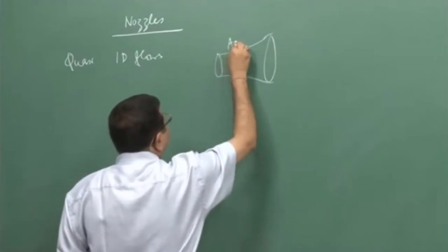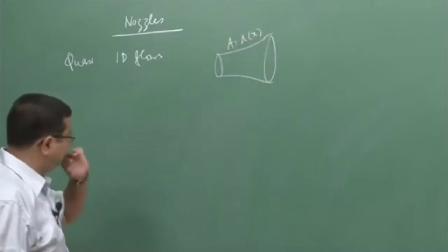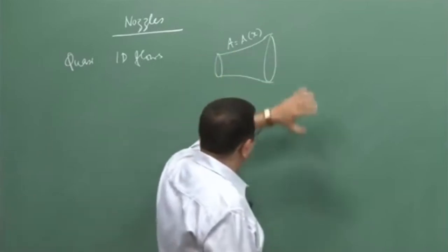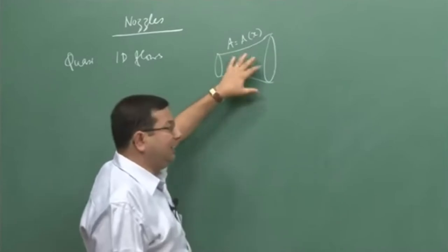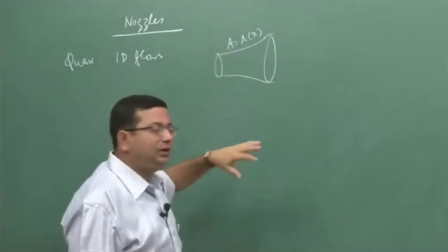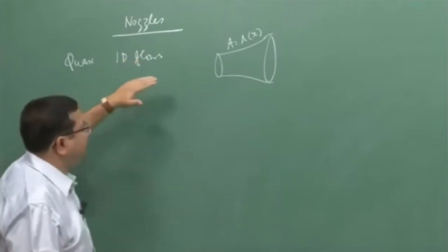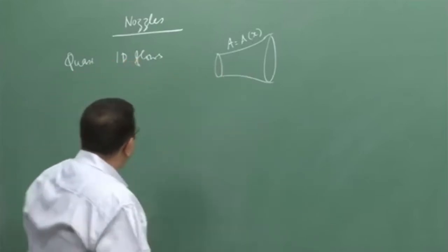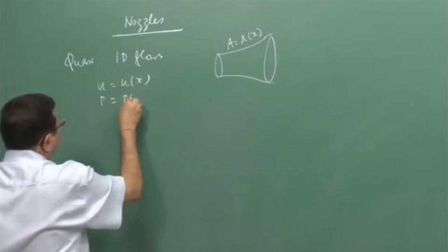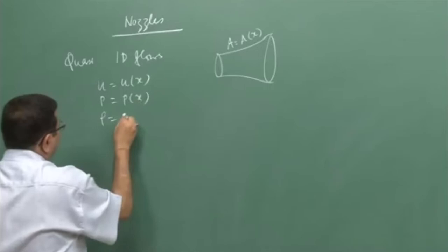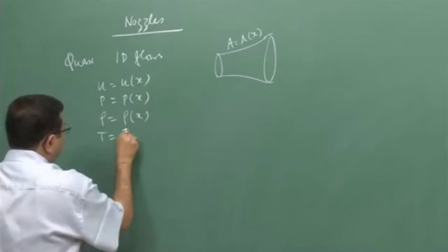We have said that if the area variation is small, then the flow properties are going to vary only along the direction of variation of area. In that case, even though the flow is three-dimensional, we can consider them to be one-dimensional flows, which are called quasi one-dimensional flows. For those cases, all the flow properties will be a function of x only, or the one-dimensional coordinate x, etcetera.